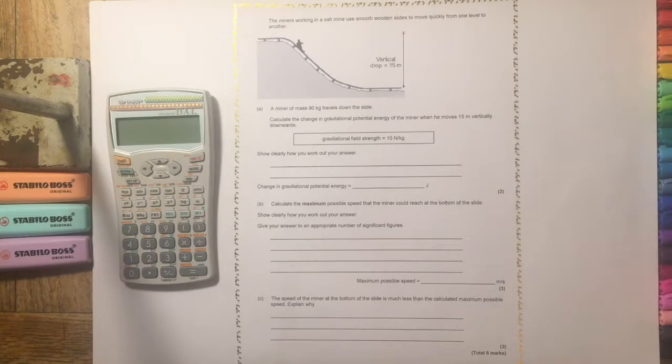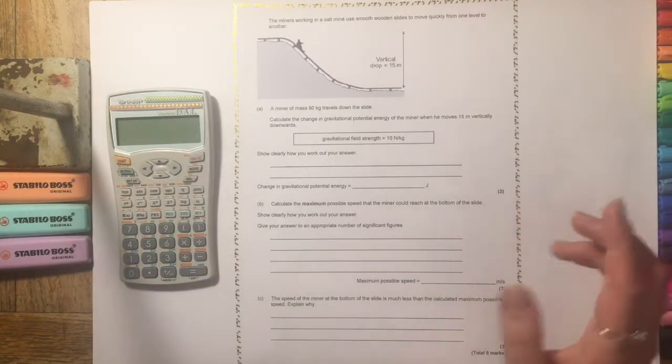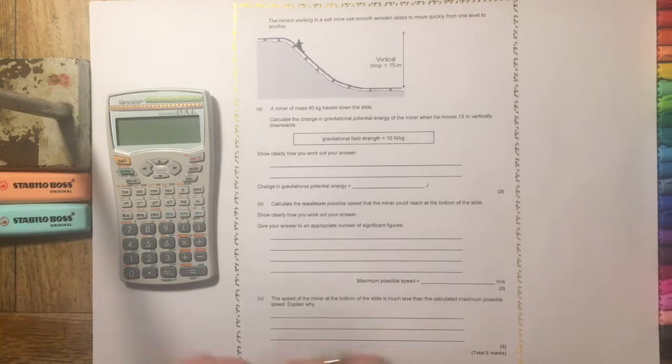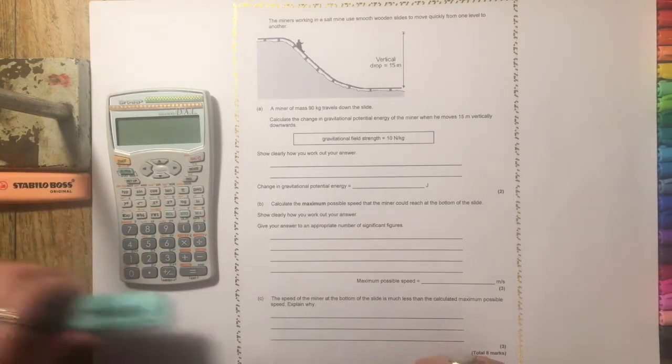So this is quite a common GCSE question from a past AQA paper, but I've seen them on similar OCR and Edexcel papers as well. So we're going to work through it and explain how we get to each section. Something that I do is I use highlighters to highlight data, so numbers that you get given you're expected to use in calculations or important things.